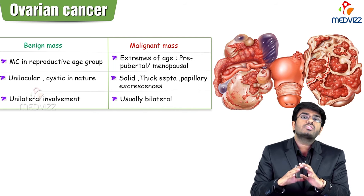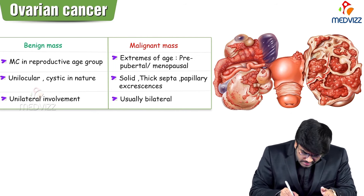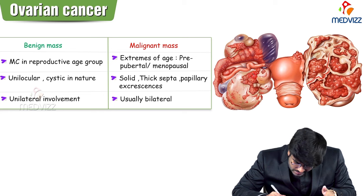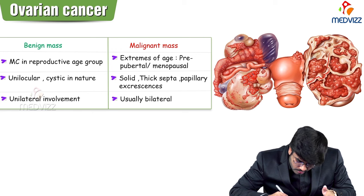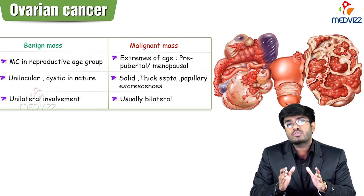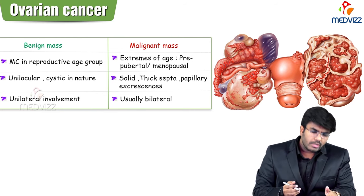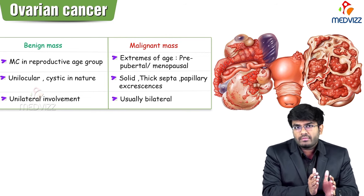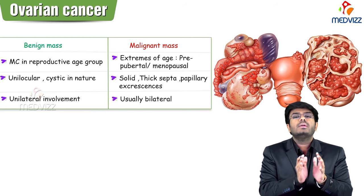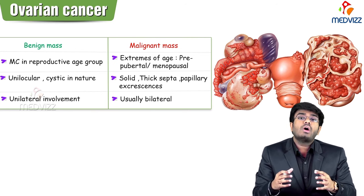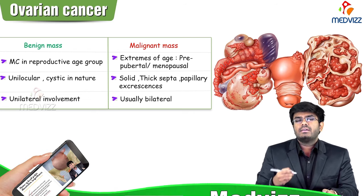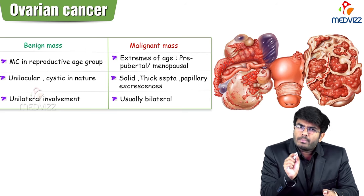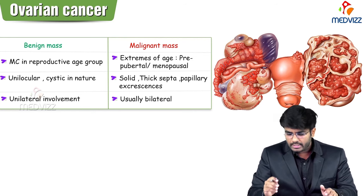Malignant masses are solid in consistency with thick septa, and you can also see papillary excrescences — papillary outgrowths on the surface — which are mainly associated with malignant ovarian tumors. If it's a benign tumor, usually a single ovary is involved (unilateral). If it's a malignant mass, both ovaries will be affected — ovarian cancers have bilateral involvement.